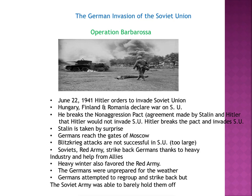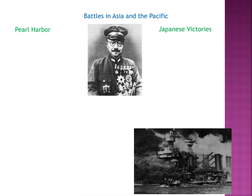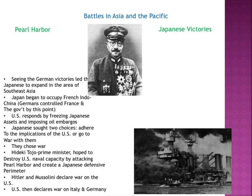That's what was happening on the Western Front of World War II. Now moving to the Eastern Front in the Pacific — the battles in Asia and the Pacific. First, Pearl Harbor. Seeing the German victories led the Japanese to expand in Southeast Asia, and by this time the Japanese had already allied themselves with the Germans.